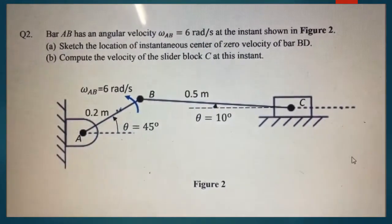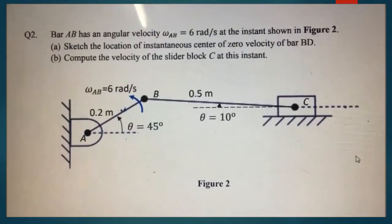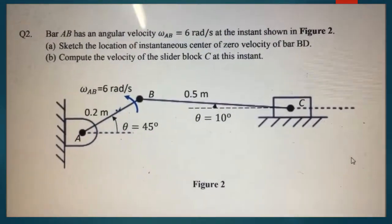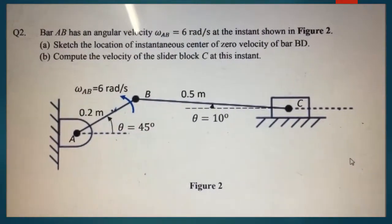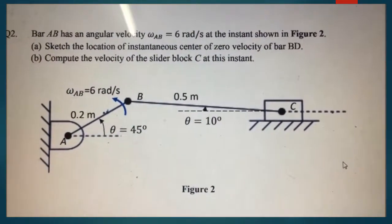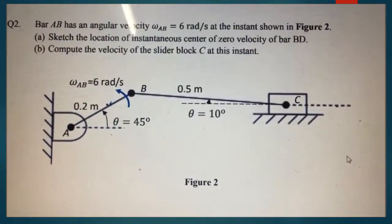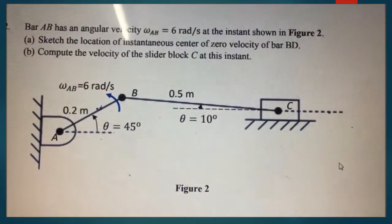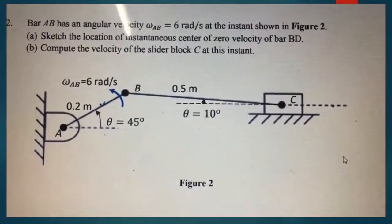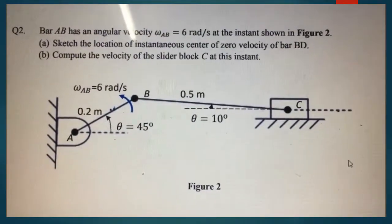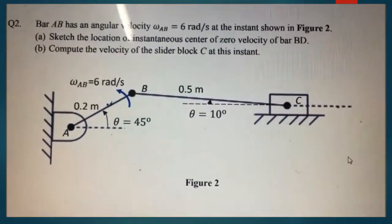Hello everyone. Today I would like to show the solutions of this type of dynamic question. The first thing is to read through the question carefully and look at the information given. It's given that the angular velocity of AB equals 6 radians per second. Part A asks to sketch the location of the instantaneous center of zero velocity of bar BD — I believe it should be bar BC since I didn't see any bar BD. The next part is to compute the velocity of the slider block C at this instance.